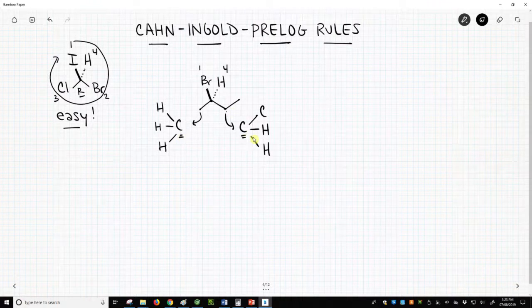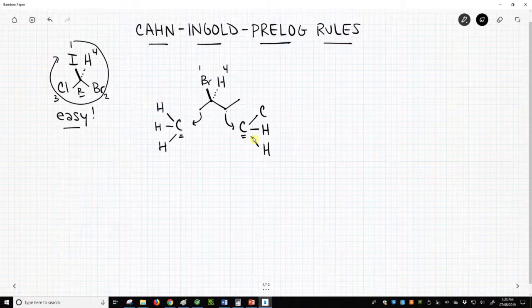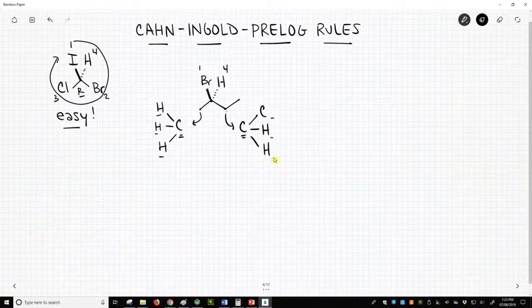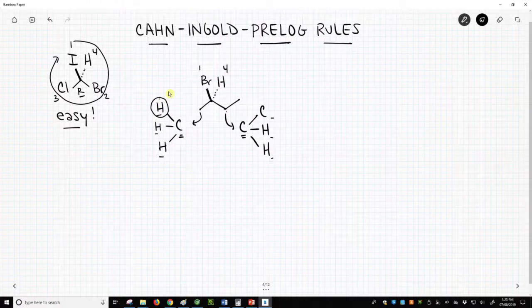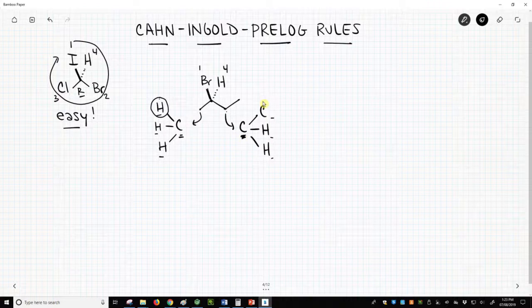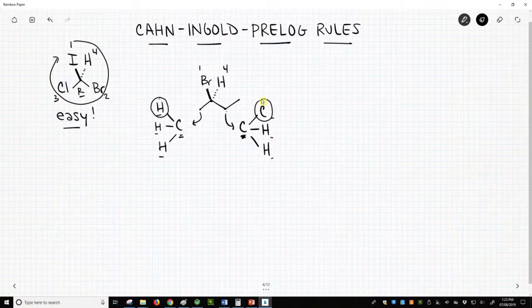And I like to think of this as like playing cards. The carbon on the left has a hand of three hydrogens, and the carbon on the right has a carbon and two hydrogens, but they play their cards in order. So the highest priority card that carbon can play is a hydrogen. Highest priority card this carbon can play is a carbon. Carbon wins.